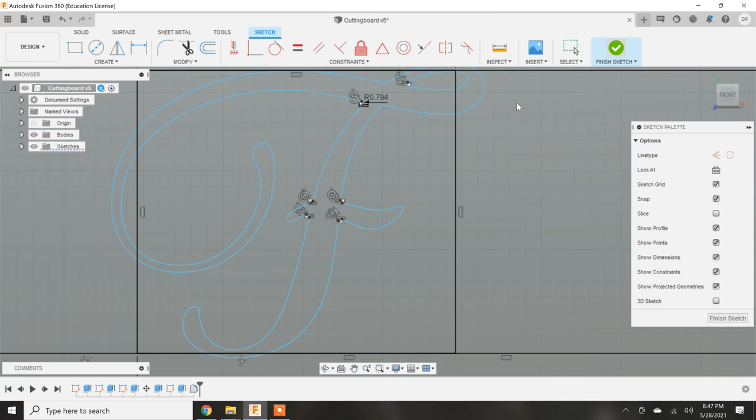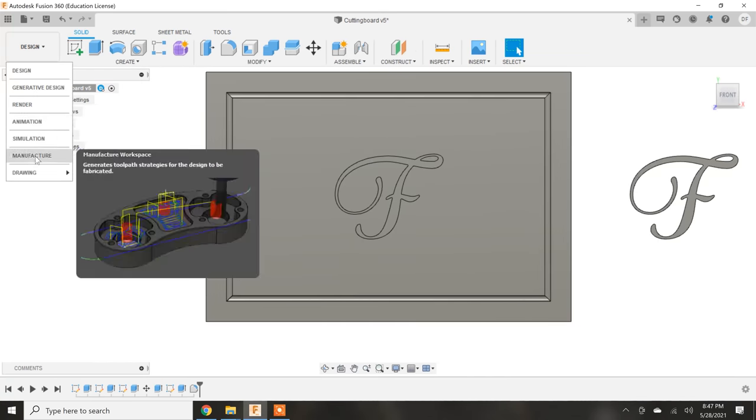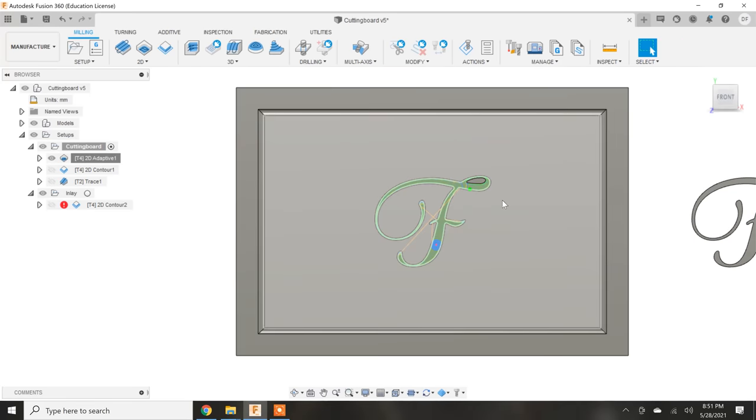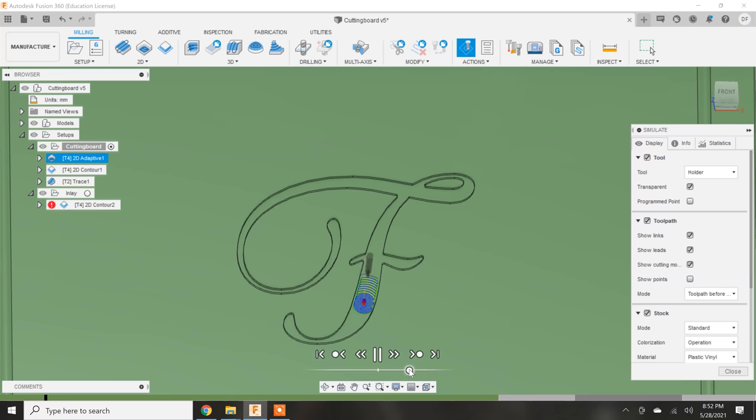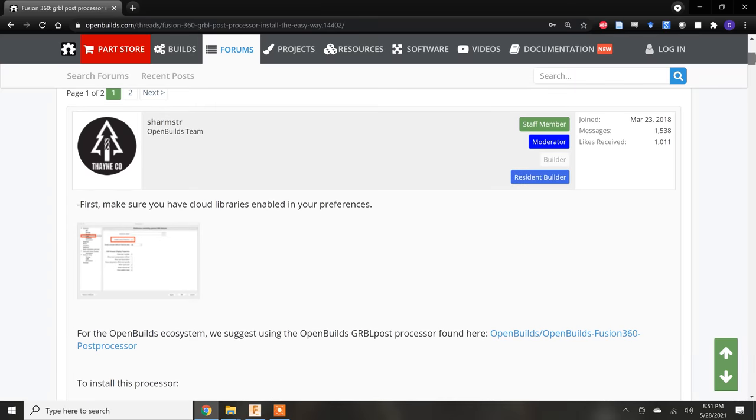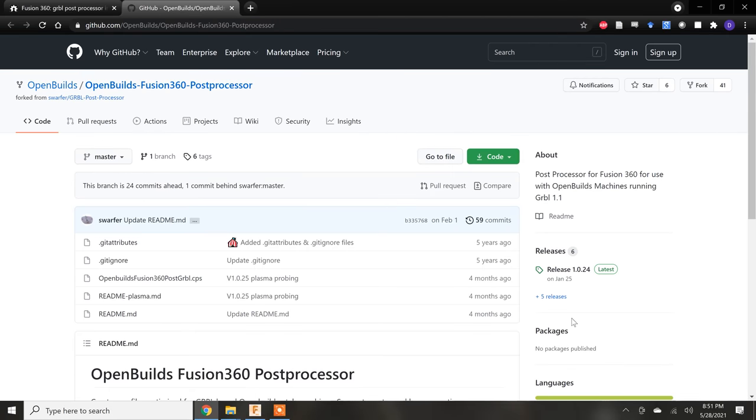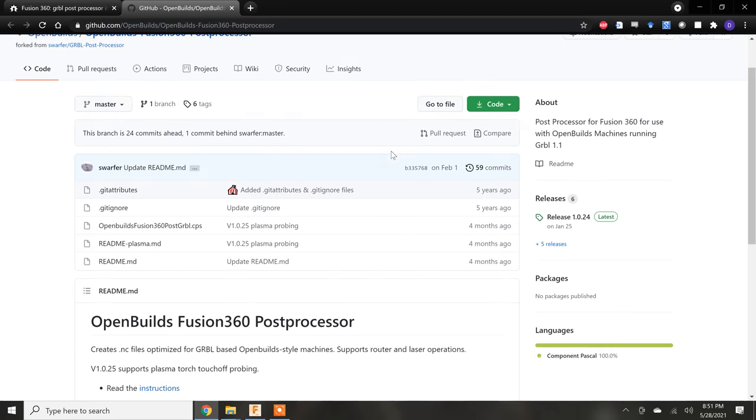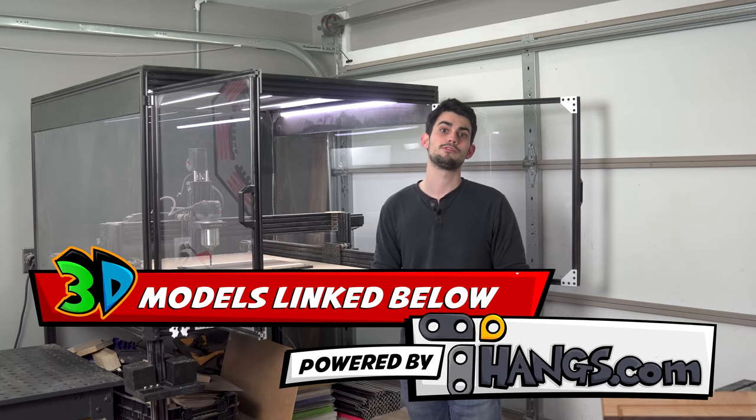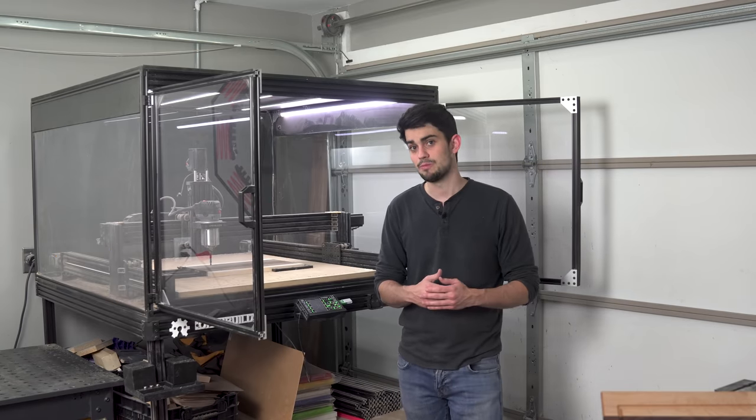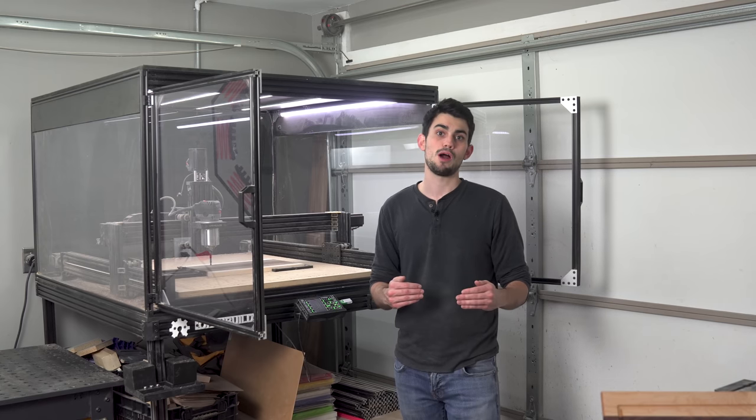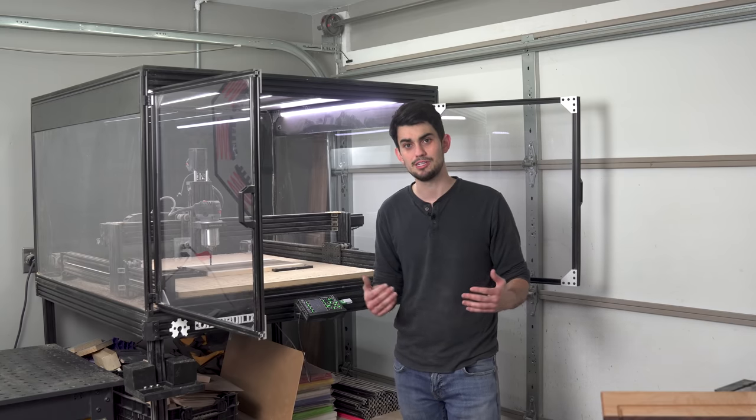As you can tell, I use Fusion 360 to make my models and generate the toolpaths that control the router. It's not the most user friendly software in the whole world, but it does allow for nearly limitless designs to be created even with the free version. At the OpenBuilds website you can download a post processor which allows Fusion to talk directly to the router. My Fusion models for all these projects will be linked below. Now I don't want to open the can of worms that is CAD-CAM on this video, but if you have any problems with creating toolpaths from these models then head over to my forum, I can help you sort it out.